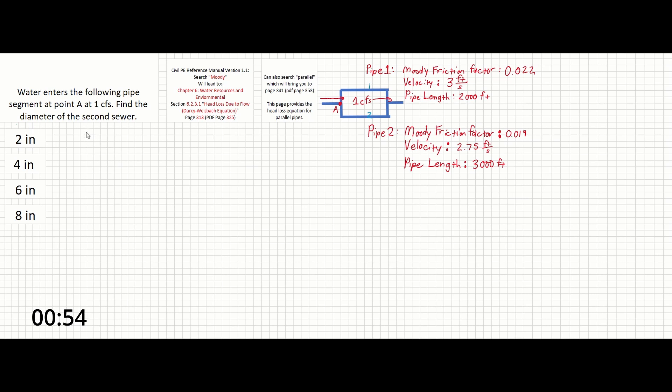This would give us the head loss equation showing that the moody friction factor times length of the pipe over the diameter of the pipe times velocity squared over 2g equals the head loss.